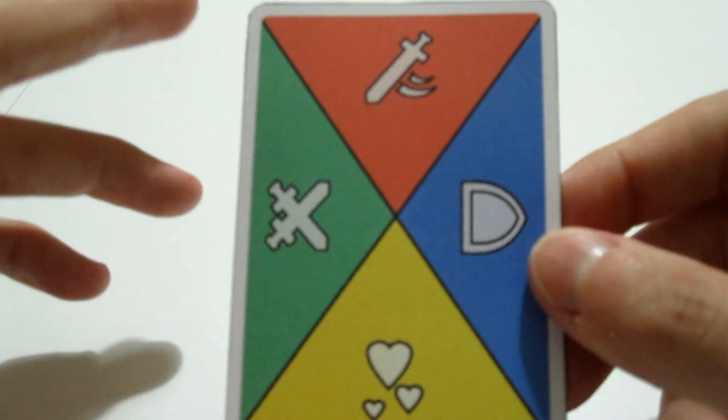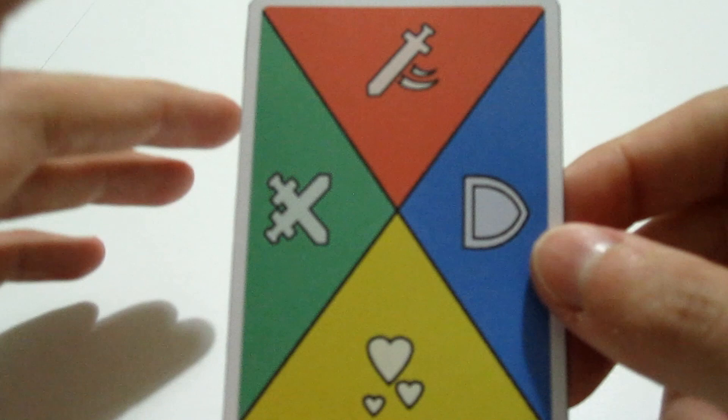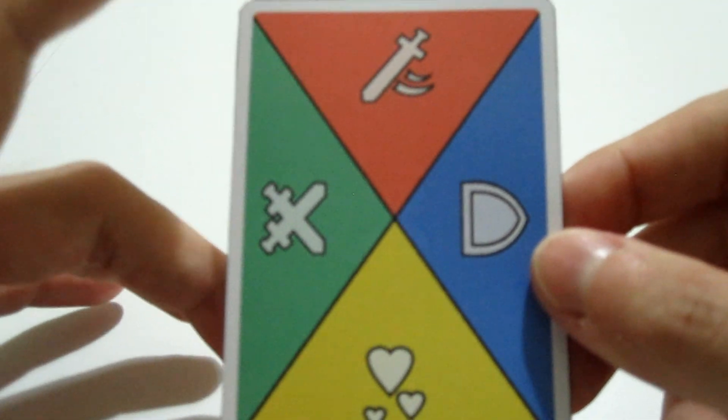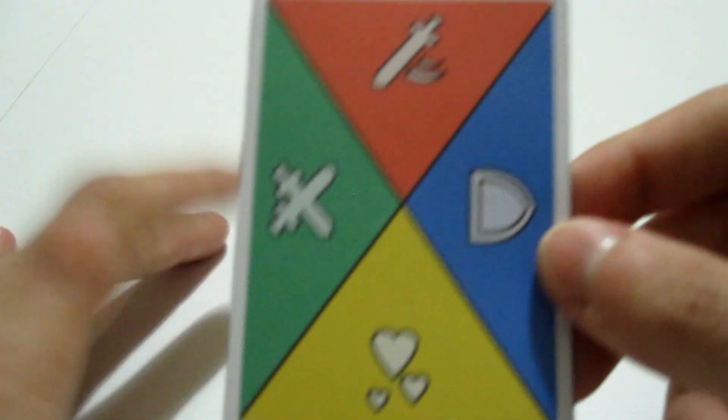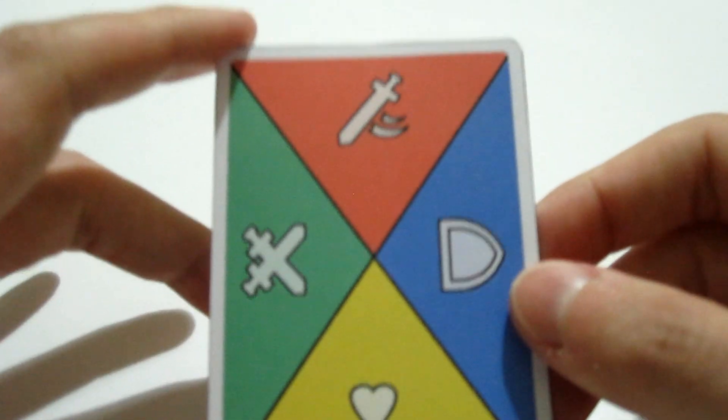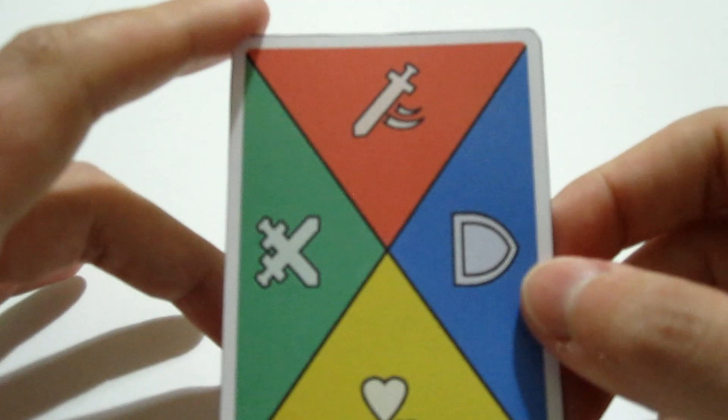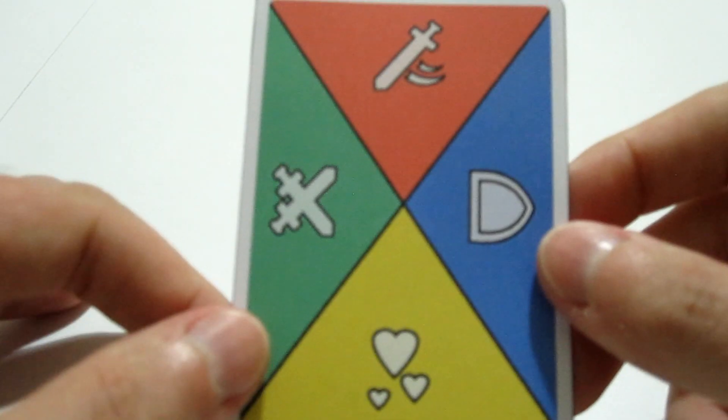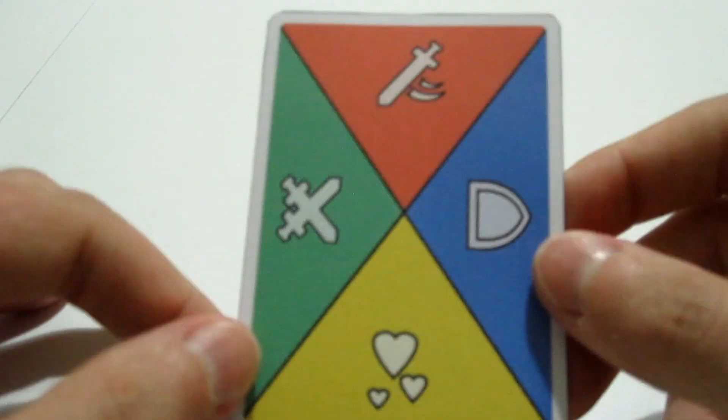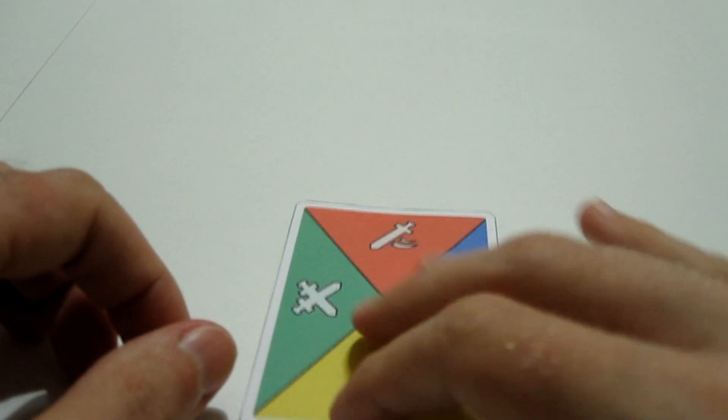There are several game variants that you can try. You can play a game mode called Free For All in which you can attack and receive attacks from any player. In order to signal the player that you are attacking, you must point a card towards them.